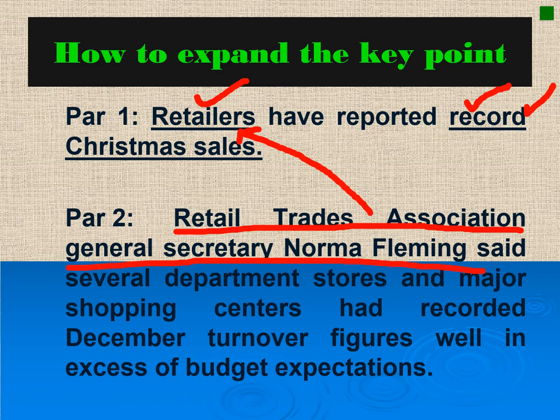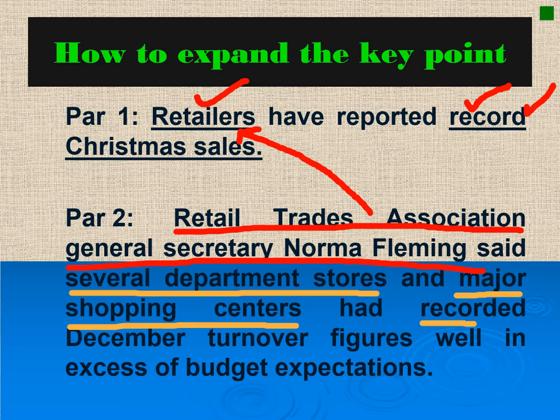How about 'record Christmas sales'? Why do retailers have reported record sales — what's their basis? It says here that several department stores and major shopping centers had recorded December turnover figures well in excess of budget expectations, meaning the Christmas sales are a record for them. So obviously there is logical sequence or logical order between the first paragraph and the second paragraph. If you're able to do that, then you have achieved logic in news writing.